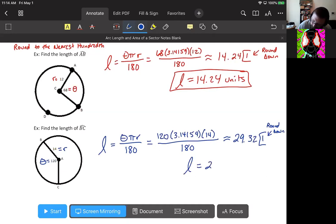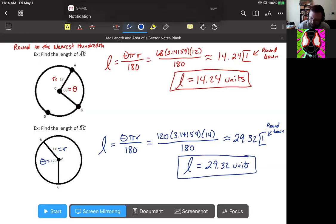So the arc length would be 29.32 units. Do you have any questions? Ask them in the chat. If not, take your screenshot, we're going to be moving to the next screen. So that's arc length. Arc length is a fraction of the circumference, so we have that equation. Our arc length L is equal to the central angle times π times the radius divided by 180.